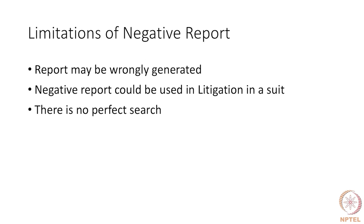There are reasons why some professionals do not communicate a patentability search report when the search turns out to be negative — in the sense that the results of the search state that you cannot patent this invention. The reason why they do not communicate it is: one, they could have been wrong. The professionals, while doing the search, could have been wrong and they do not want to give the client something in writing to say that this particular invention cannot be patented.